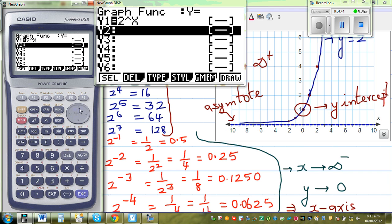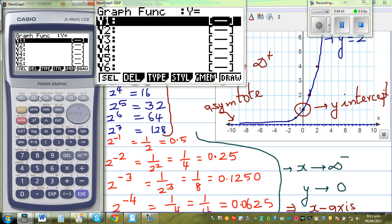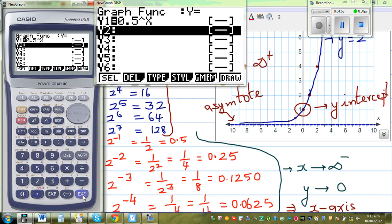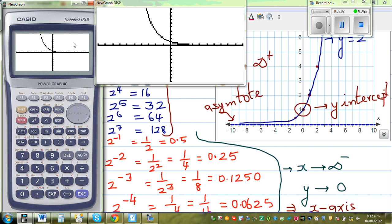So along with this, one other thing that I told you, if you put say 0.5 raised to x. What type of graph would you expect? Would it be an exponential graph or a decay curve? So let's draw it. So this is called a decay curve.